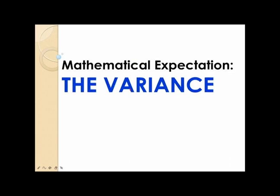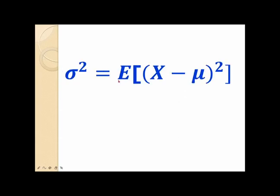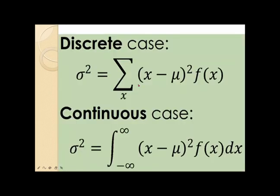In this video, I'll explain the variance of the random variable X. The variance of the random variable X is the expectation of the squared deviation of the random variable from its mean. Our standard notation for the variance is sigma squared. Note that the positive square root of the variance is the standard deviation. You can calculate the variance of the random variable X using two formulas, depending on whether X is discrete or continuous.